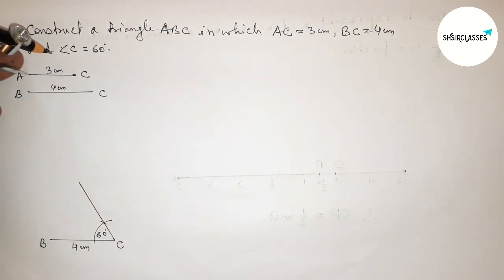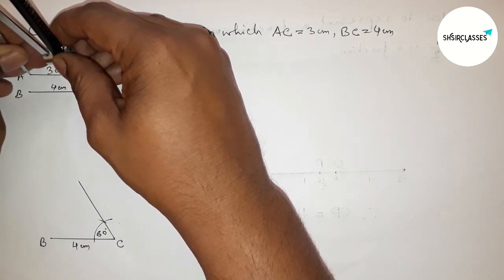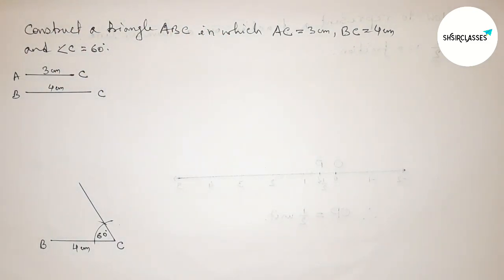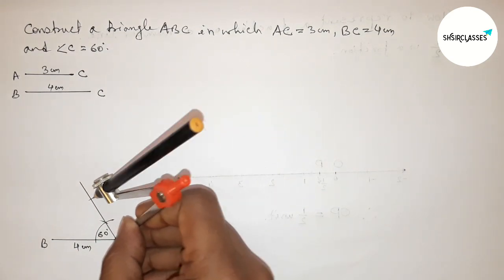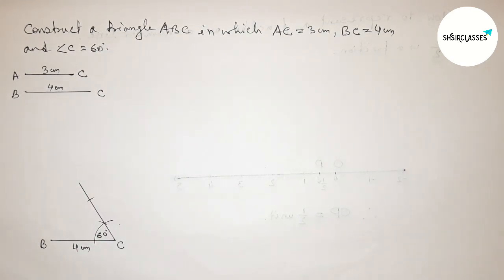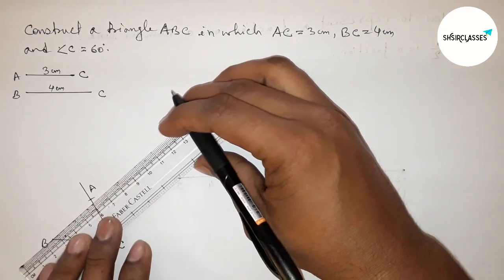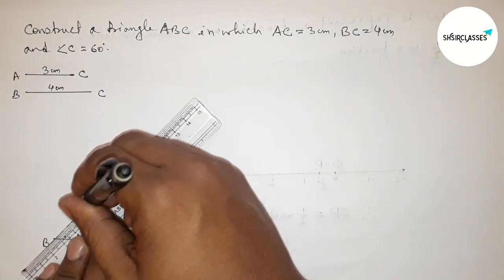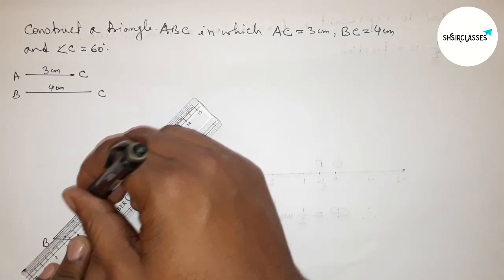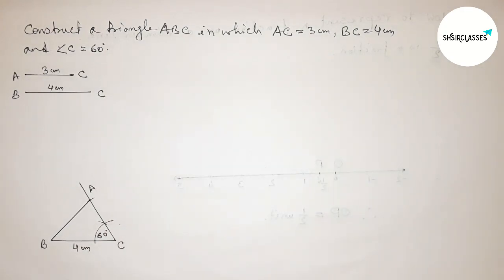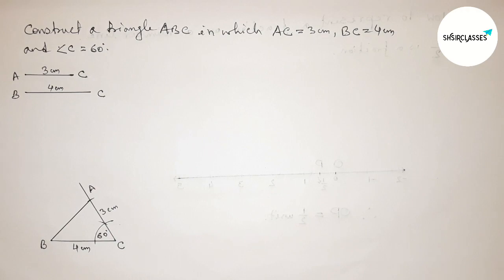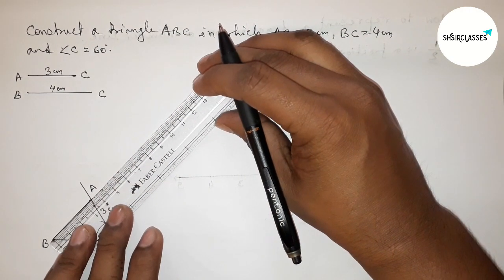Next, taking the length AC equals to 3 centimeters with the help of a compass. Now putting the compass on point C and cutting here. Now taking here point A. Joining A and B to get triangle ABC. So AC equals 3 centimeters. Now measuring the length of AB.